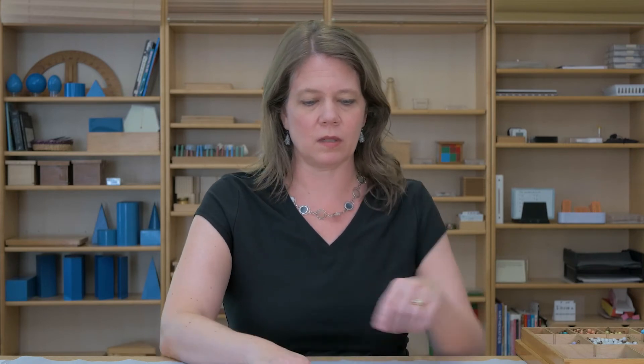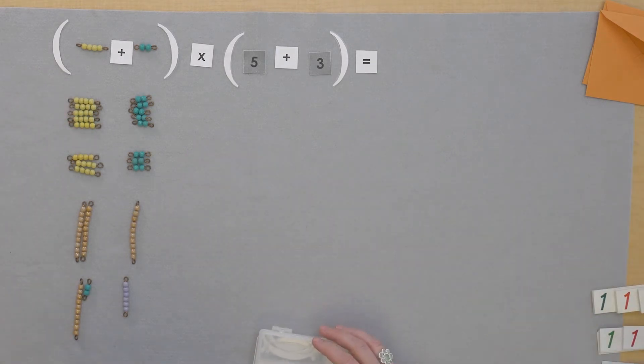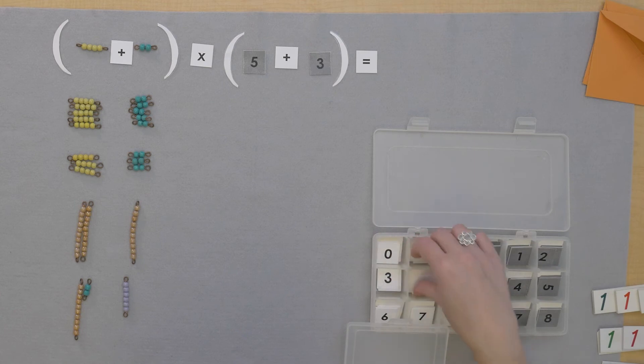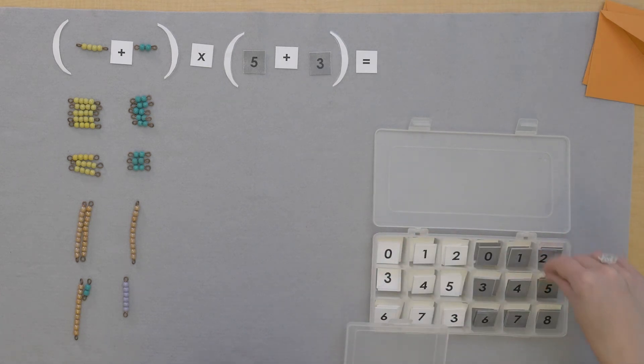Let's put out in cards what we just did with the beads. Let's just see what that looks like in cards. So we had four times five.